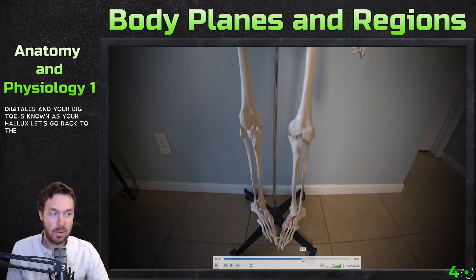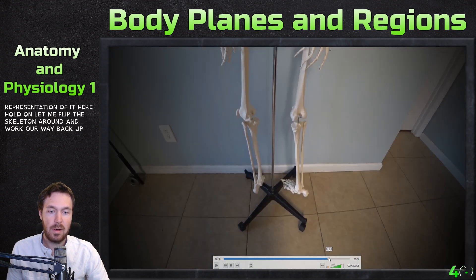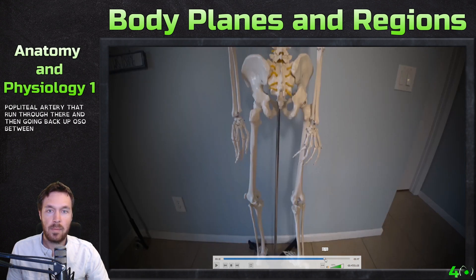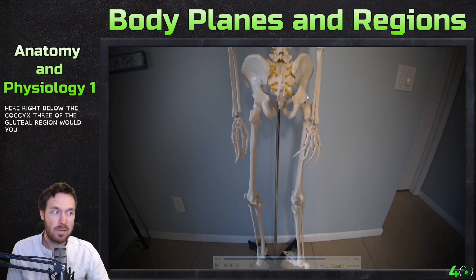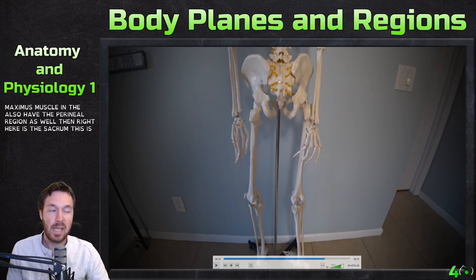Now let's look at the posterior side. The bottom of the foot is called the plantar region. The heel bone back here is called the calcaneus — that's the calcaneal region. The calf region is called the sural region. The back of the knee is the popliteal region — there's a popliteal vein and popliteal artery that run through there. Between this region right below the coccyx, we have the gluteal region — the gluteus maximus muscle — and also the perineal region. Right here is the sacrum — this is the sacral region.